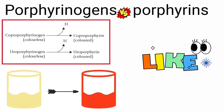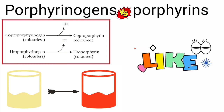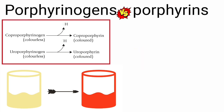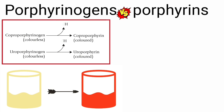Regarding porphyrinogens versus porphyrins: porphyrinogens are reduced porphyrins. They are not colored because their pyrrole rings are connected by methylene bridges and the double bonds are not conjugated over the whole system. The actual intermediates of heme synthesis are porphyrinogens. When these porphyrinogens are exposed to light, they lose hydrogen atoms and are converted to the corresponding colored porphyrins. For example, coproporphyrinogen is colorless, and when it loses hydrogens, it is converted to the colored coproporphyrin. Similarly, uroporphyrinogen is converted to the colored uroporphyrin.